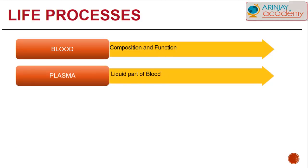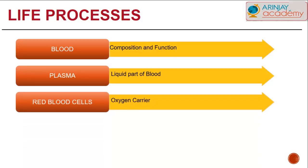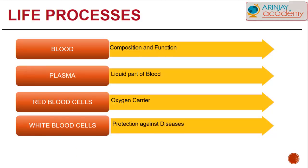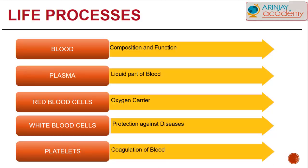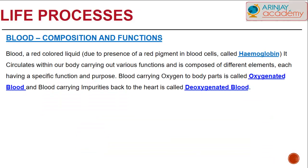Firstly, we'll have a look at plasma, which is the liquid part. We'll have a look at RBCs, or red blood cells, that carry oxygen. Then white blood cells, or WBCs, that help protect against diseases and germs, and blood platelets that help in the clotting and coagulation of blood.